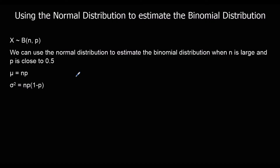So the larger n — the more bits of data there are — and the closer the probability is to half, the better that approximation is going to be. This is given to us in the formula book. When we're using the normal distribution, the mean is np, and the variance is np times (1 minus p). So in order to do the normal approximation of the binomial distribution, we use the mean and the variance given in the formula book.